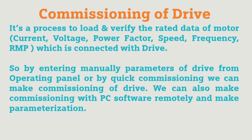Now we'll see the commissioning of the drive. Commissioning is a process to load and verify the rated data of the motor — like current, voltage, power factor, speed, frequency, or RPM. We enter this data based on the motor and commission the drive. You can commission manually with the basic or intelligence operating panel, or connect PC software to the drive and perform automatic parameterization remotely. In the next video we will see how to commission the Siemens G120 AC drive with the intelligence operating panel and from the Starter software.